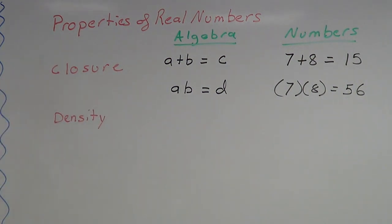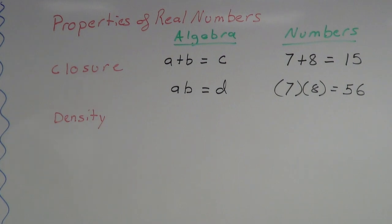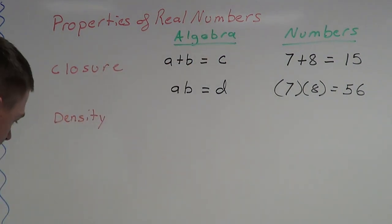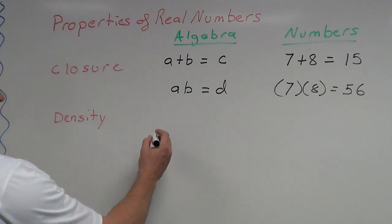Now onto the density property. The density property simply states that between any two real numbers there is another real number. That's kind of hard to do with variables, so I'm going to use a number line for this one — forget the algebra, just the number line.